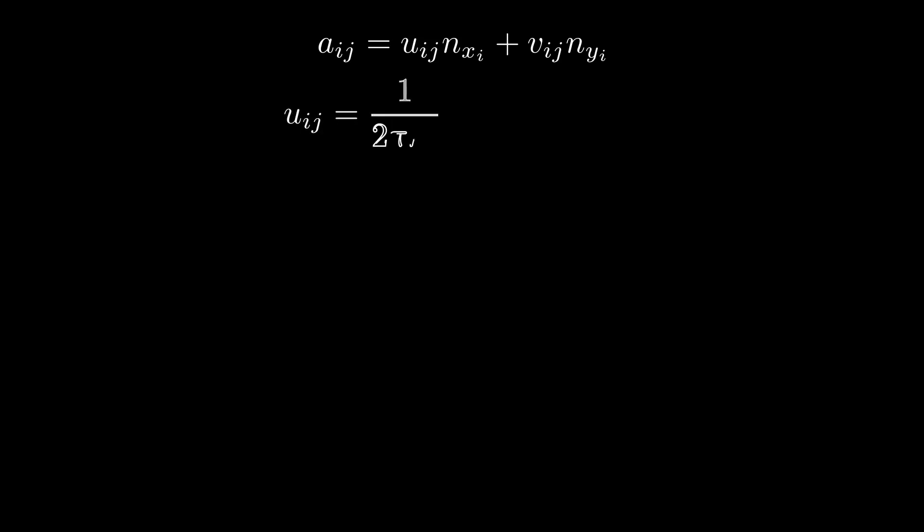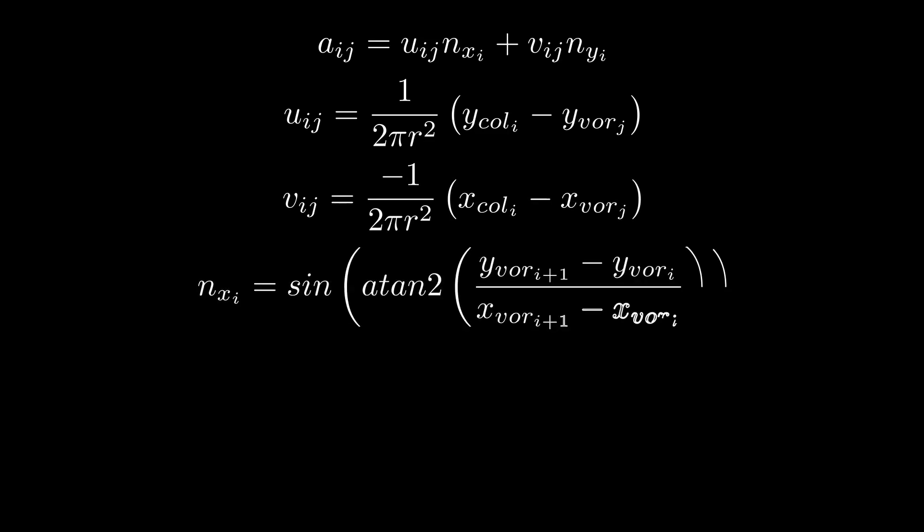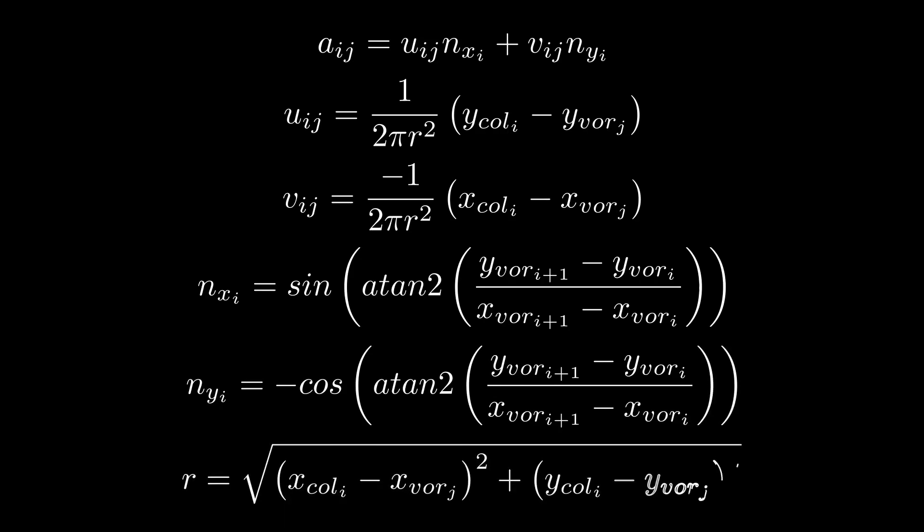U and V are the velocity components of the vortex at that co-location point and NX are the components of the normal vector at that co-location point. Since the vortex velocity is dependent on the distance from its singularity we find R to be the radius from the vortex to the co-location point.